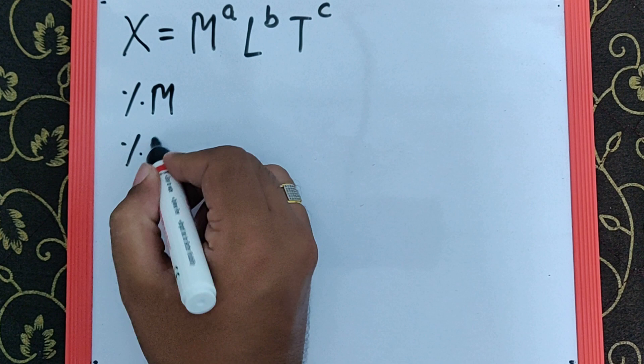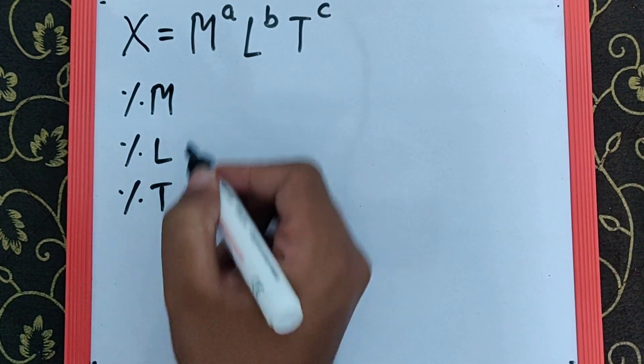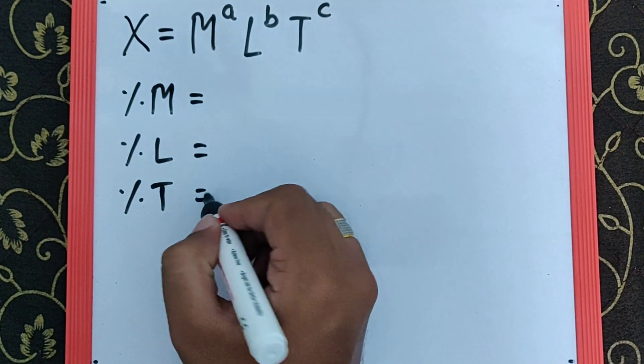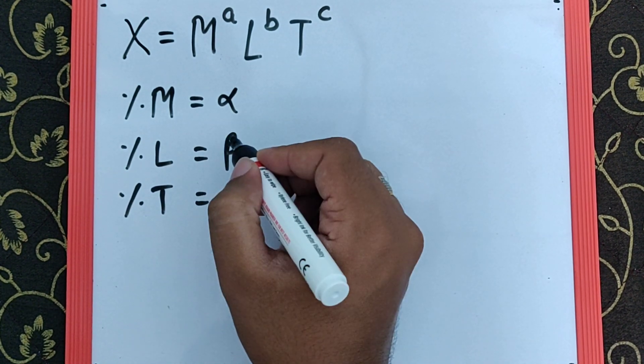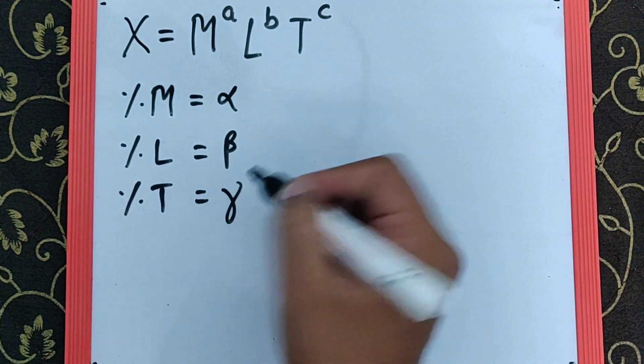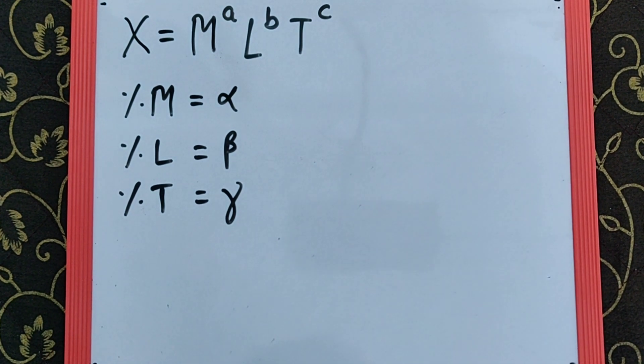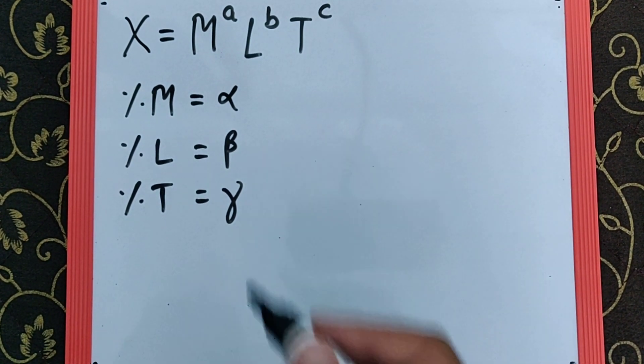L, and T is given by alpha, beta, and gamma. Now they want us to find the total error. As we know by rule,